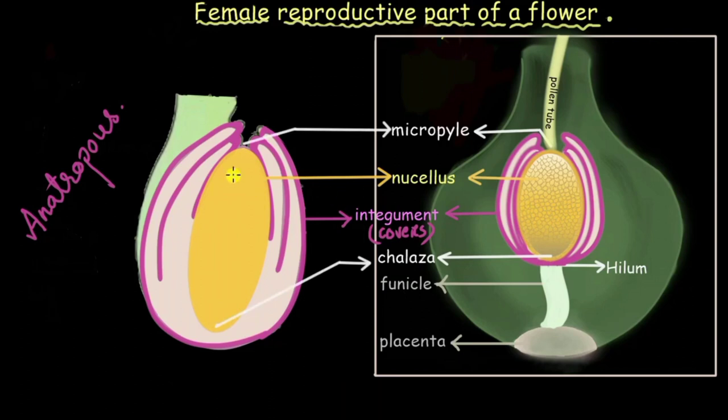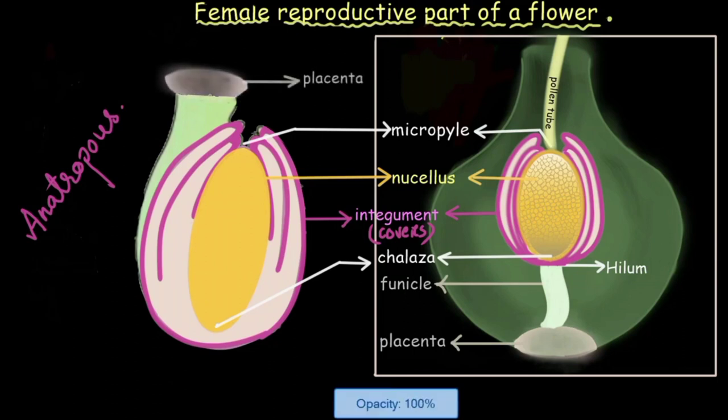And now as this ovule is placed upside down, this funicle and the placenta will be somewhere on the top right. So if we consider this to be the placenta, the portion that is attaching the placenta with the integuments will be called the funicle right. So this is the funicle.